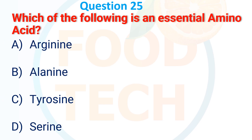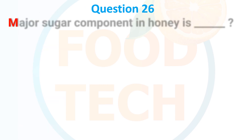Question 25: Which of the following is an essential amino acid? A. Arginine, B. Alanine, C. Tyrosine, D. Serine. The answer is A. Arginine.